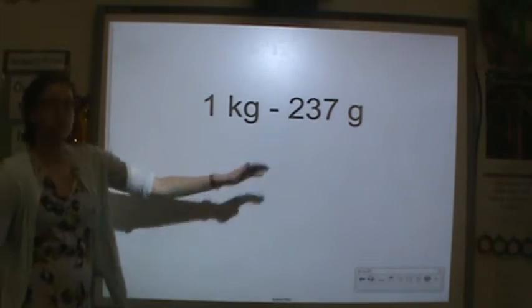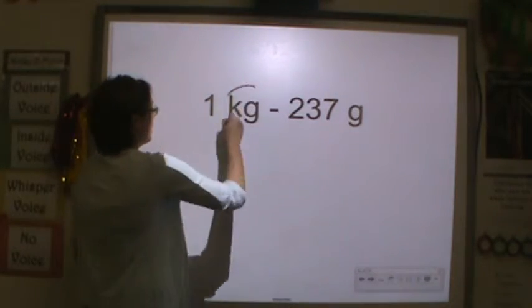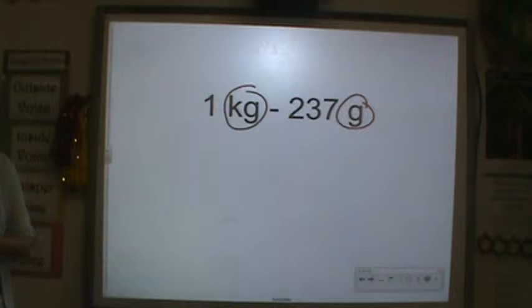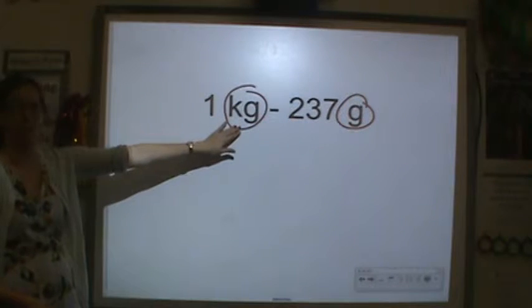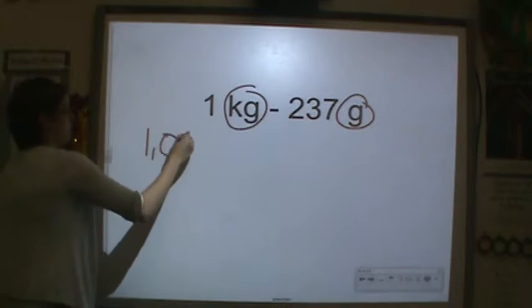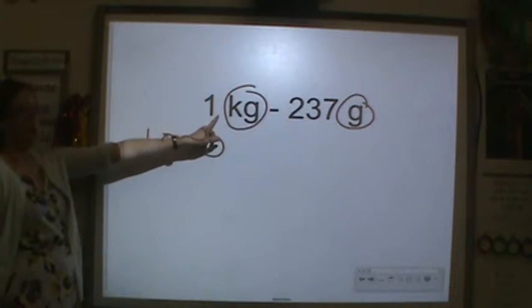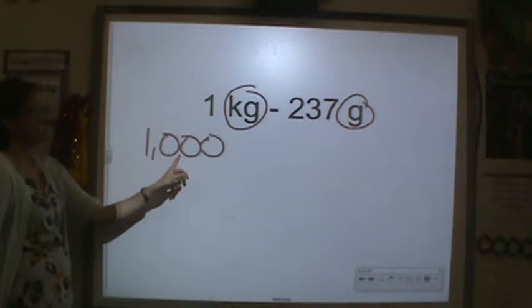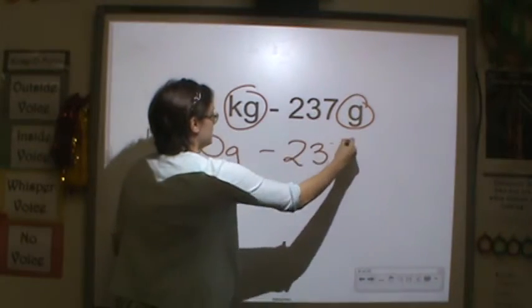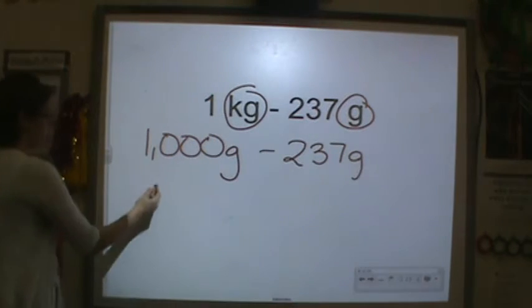1 kilogram minus 237. We cannot subtract this the way it is because the units are not the same. So we have to make the units the same. So 1 kilogram is equal to 1,000 grams minus 237 grams. Now you can subtract.